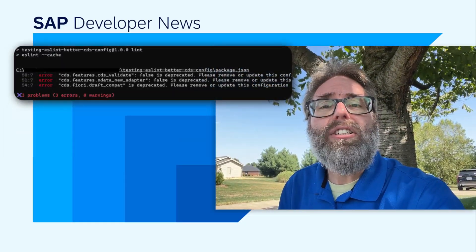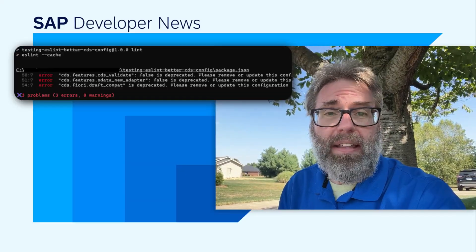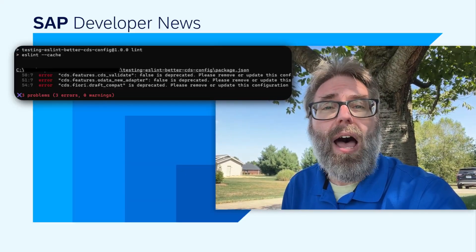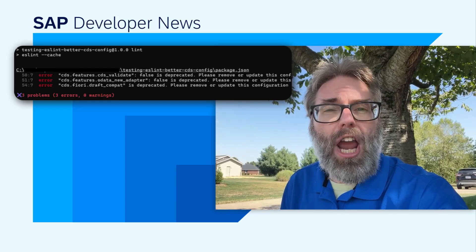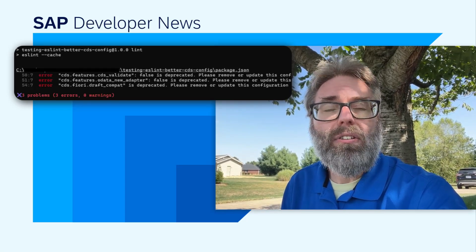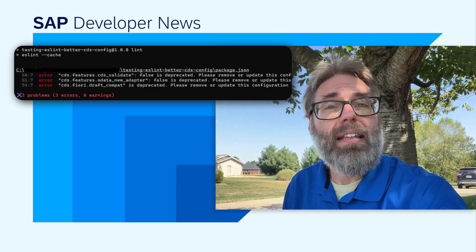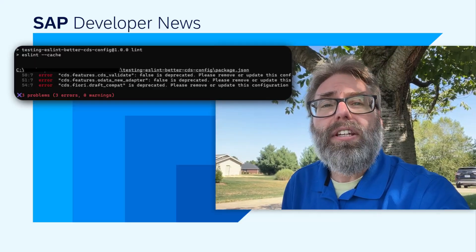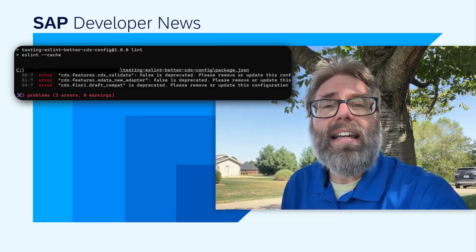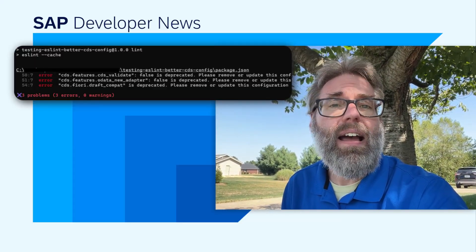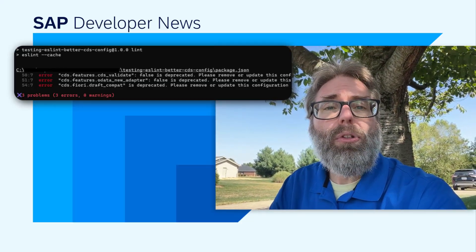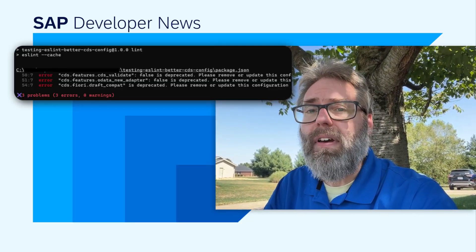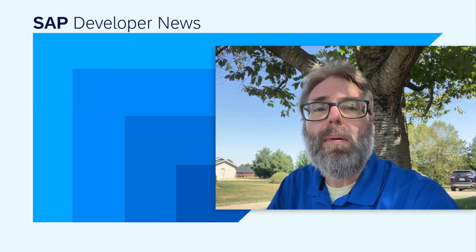He's using the JSON plugin that was already available and building on top of it to allow you to parse and check the configuration files specific to CAP, like the package JSON. The additional functionality he has added is checking for deprecated features and keys. So if you think that would be a useful addition to your CAP development environment, check out his blog post today and start using that plugin.